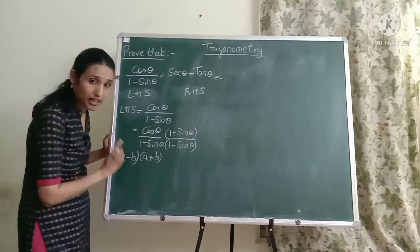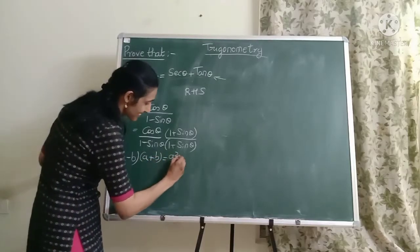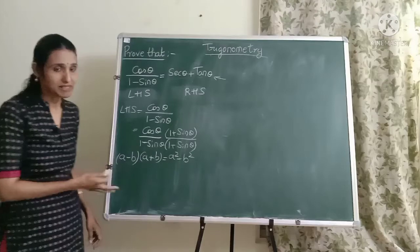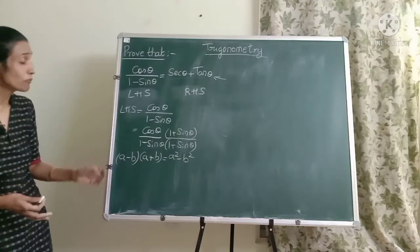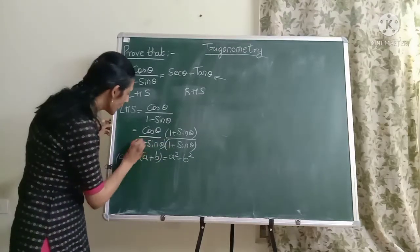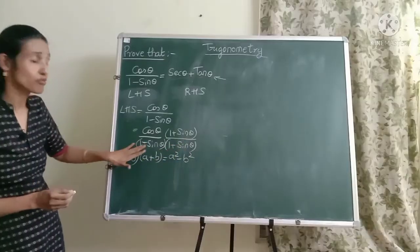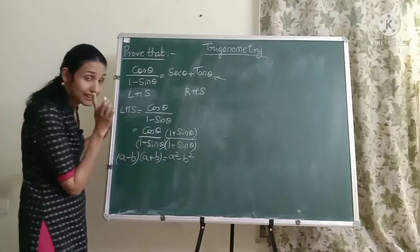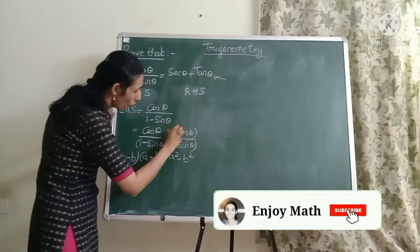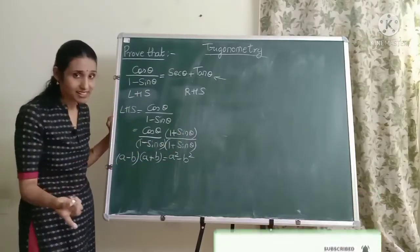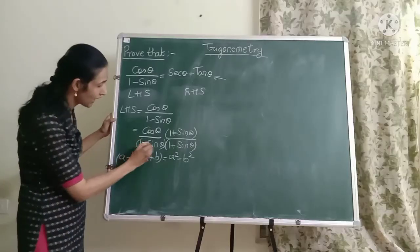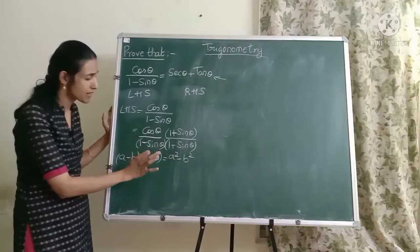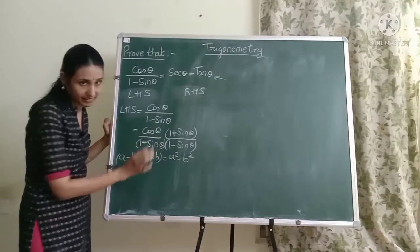a minus b into a plus b. What is it? Yes it is a square minus b square. You must have learned this before. So we have brought this denominator to this form friends. So what are we doing? We are rationalizing and that's why we have chosen 1 plus sin theta and not 1 minus sin theta again. See 1 and 1 is same, sin and sin is same. You just change the sign.